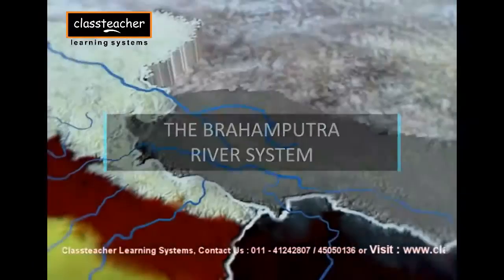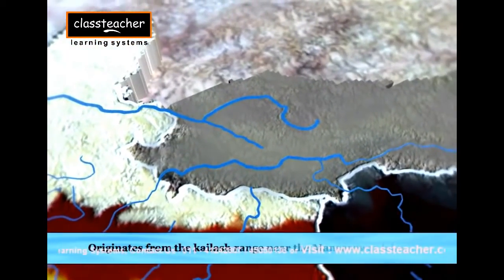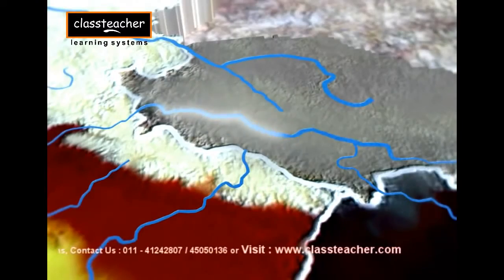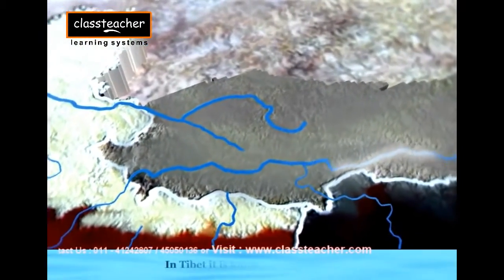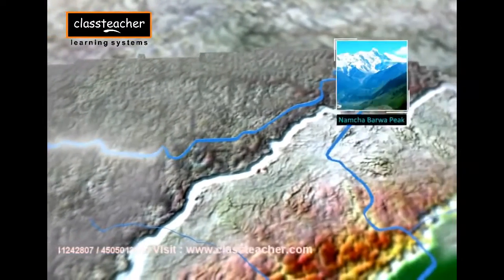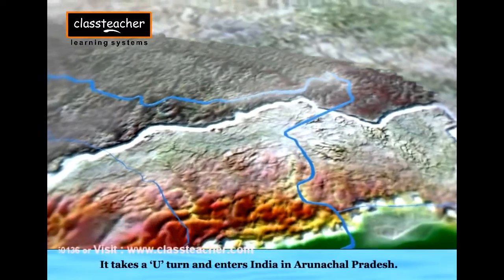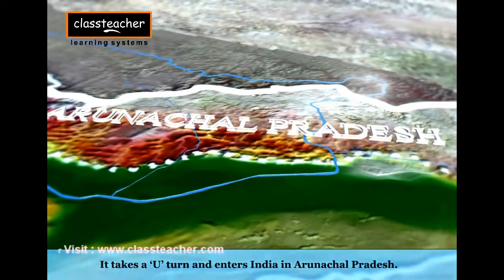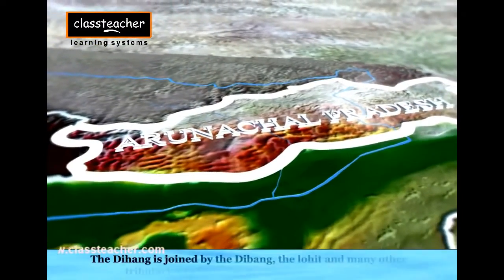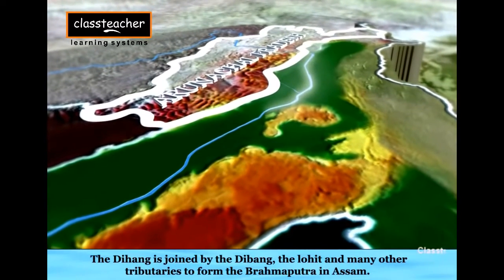The Brahmaputra, one of the largest rivers of the world, has its origin in the Chaimayungdung glacier in the Kailash range near Mansarovar Lake. From here it flows eastward parallel to the Himalayas, where it is known as the Tsangpo, which means the purifier. The Namcha Barwa peak obstructs the flow of the river and forces it to take a U-turn, thereby the river enters India in Arunachal Pradesh through a deep gorge. In this region, the river is popularly called Dihang and is joined by rivers Dibang, Lohit, and many other tributaries to form the Brahmaputra in Assam.